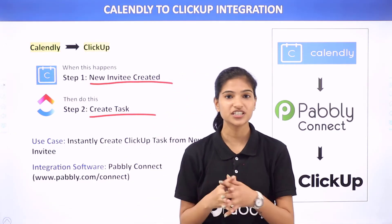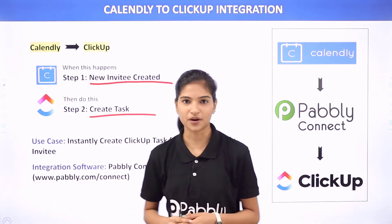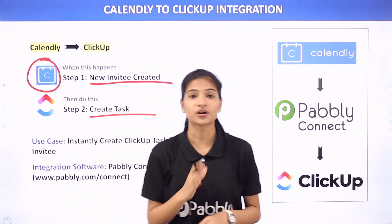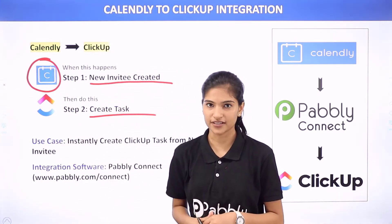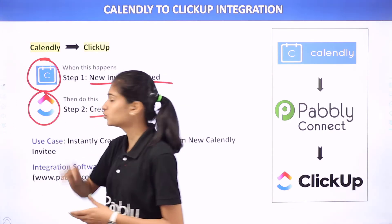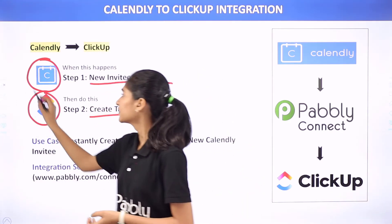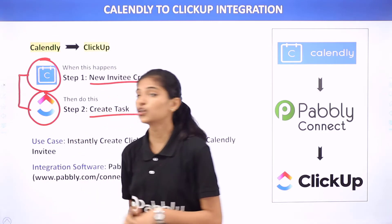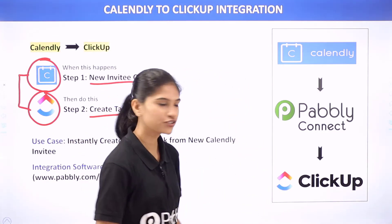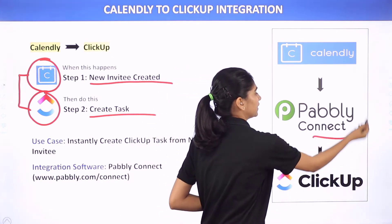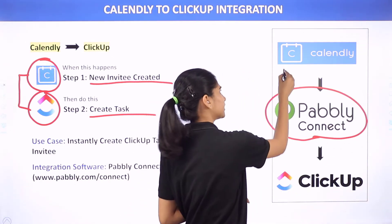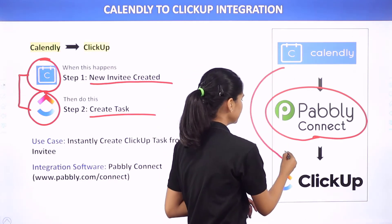Let us know what these two software applications are all about. Calendly is a software application where you can schedule your appointments, meetings and events. Whereas ClickUp is a project management tool. The issue is that Calendly and ClickUp don't have any integration between them, and that is why we are going to use Pabbly Connect.